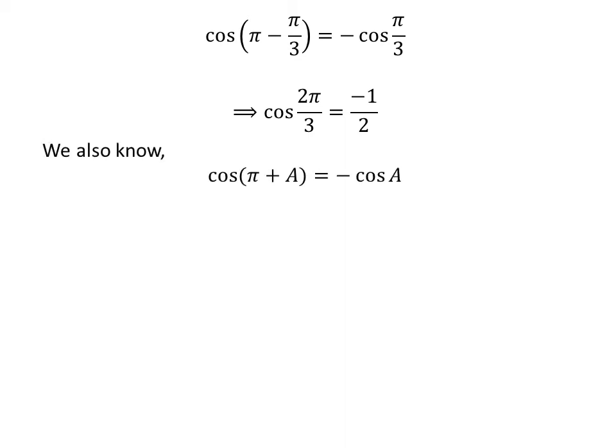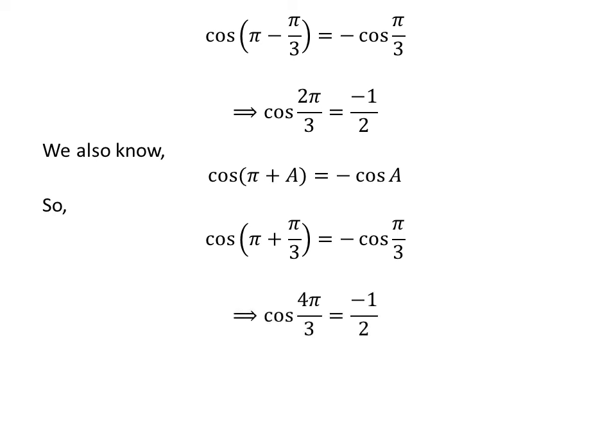We also know the famous trigonometry identity cosine of (π plus a) is equal to minus cosine of a. The proof is given in the video in the upper right corner, and the link is also in the description. Applying this identity: cosine of (π plus π/3) equals minus cosine of π/3. Since π plus π/3 equals 4π/3, we get cosine of 4π/3 is equal to minus one-half.